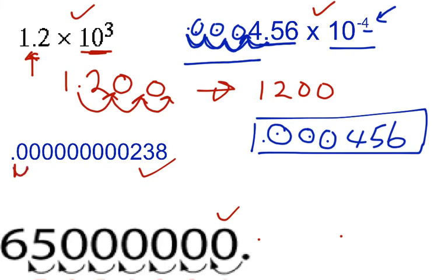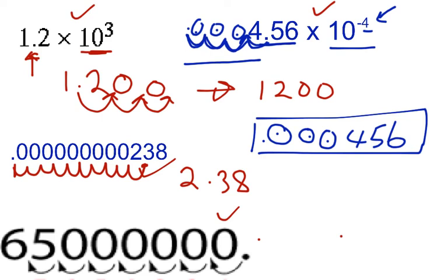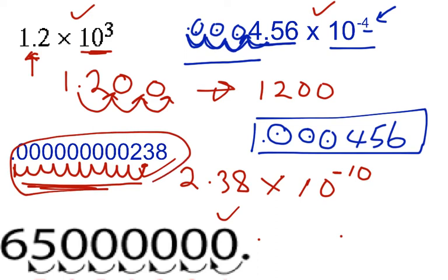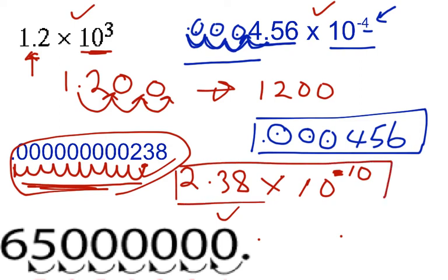So we move 1, 2, 3, 4, 5, 6, 7, 8, 9, 10 places. 2.38 is greater than or equal to 1 but less than 10. So what's going to happen is we write down 2.38 and we moved the decimal 10 places, so we put times 10 to the negative 10. How do we get negative 10? We moved the decimal 10 places, and since the original number is less than 1, the exponent has to be negative. So that will be our final answer for that one.